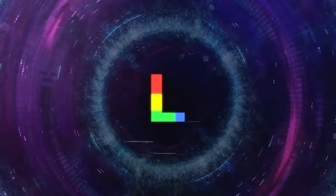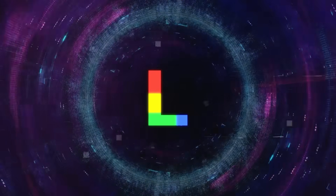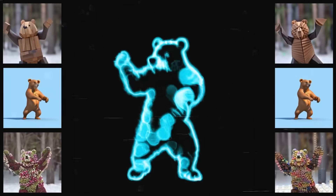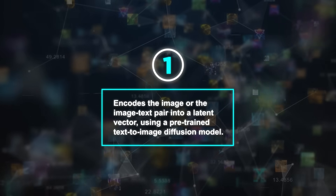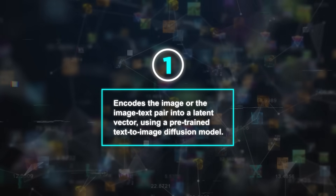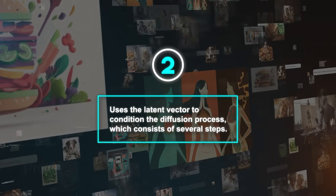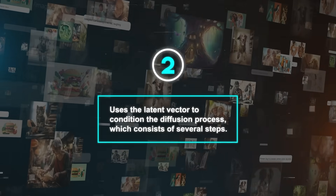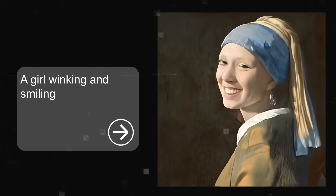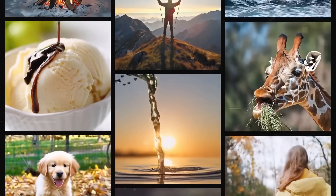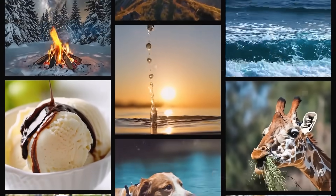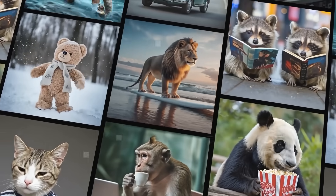It can also generate videos from images or from a combination of images and text using a similar diffusion-based process. It encodes the image or image-text pair into a latent vector using a pre-trained text-to-image diffusion model, then uses the latent vector to condition the diffusion process. The model applies the Spacetime U-Net iteratively to produce a less noisy video at each step, repeating until the final video matches the image or image-text pair.